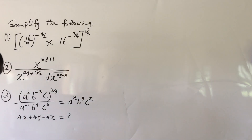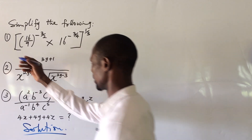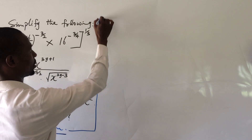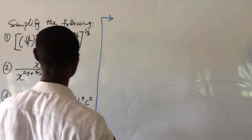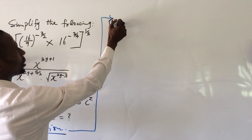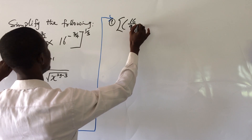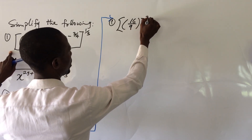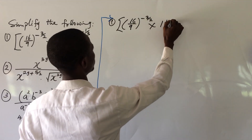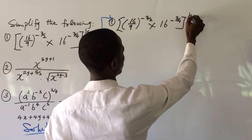Let's take the solution. We take the first one — let's continue on this other side of the board. The first question reads: square bracket open, 16 all over 9, close bracket, all to the power of 3 over 2, times 16 to the power of 3 over 4, square bracket closed, all to the power of 3.